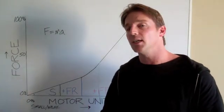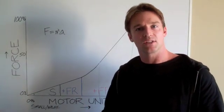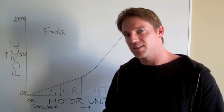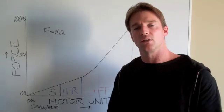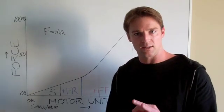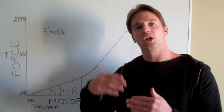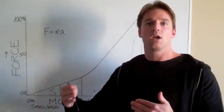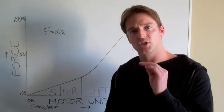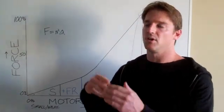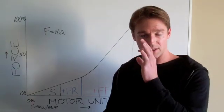And the first motor units to drop out are the biggest, strongest ones. Why? Because they have the lowest endurance characteristics. And Henneman's size principle tells us that the motor units that are largest have the largest motor neurons. And the motor neuron determines its recruitment order. So, the motor units with the smallest motor neurons are recruited first. And the motor units with the largest motor neurons are recruited last.